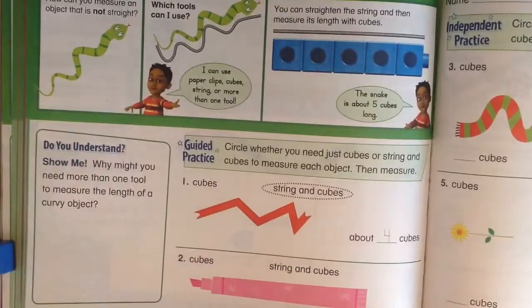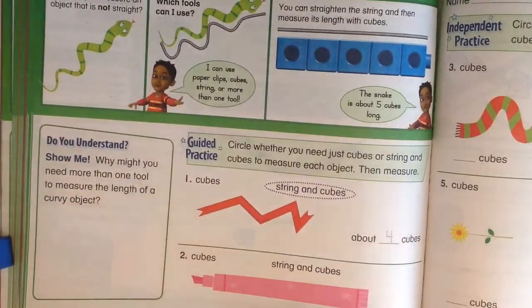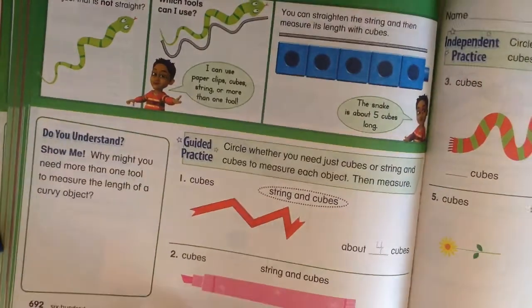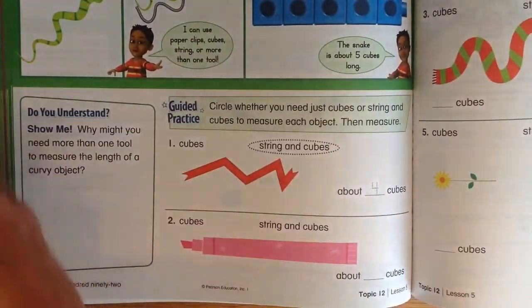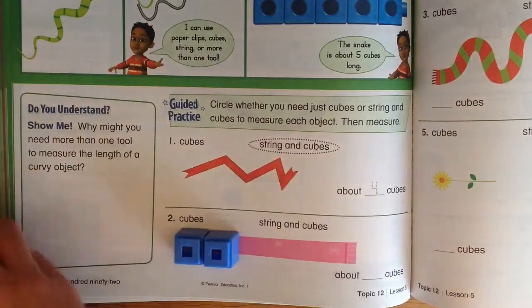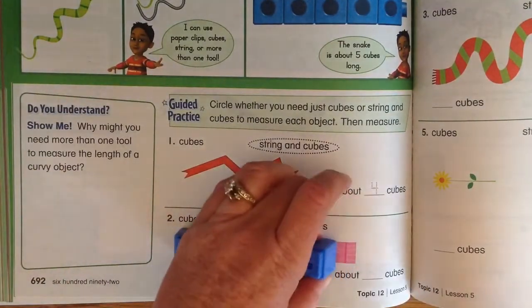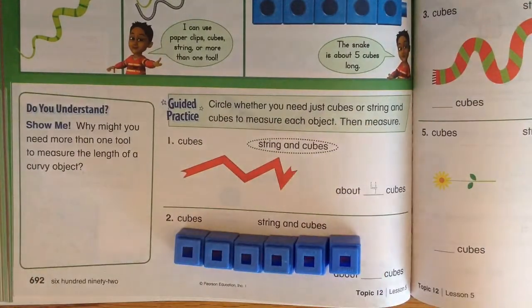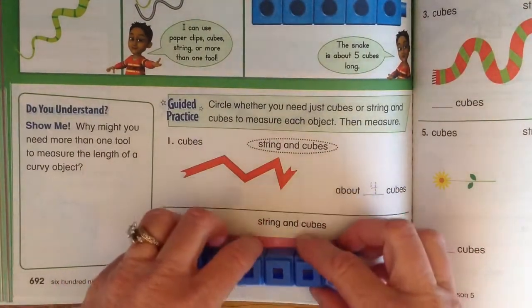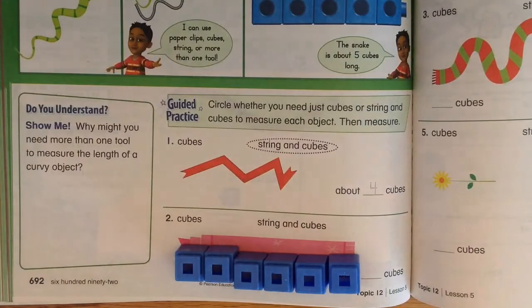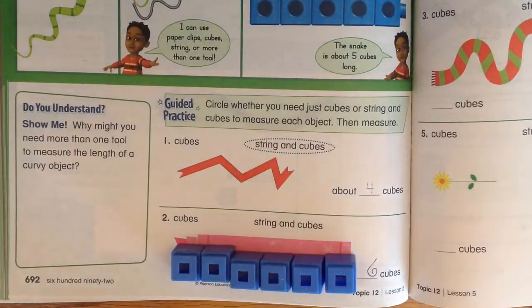Now for the marker it's already straight so I don't have to use the string. I can just set the cubes down. One, two, three, four, five, six. So that marker is just about six cubes long and I don't need to worry about the string.